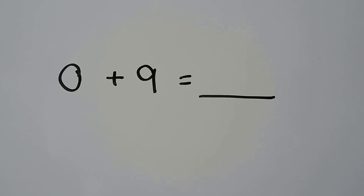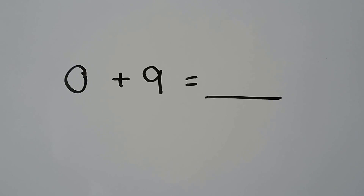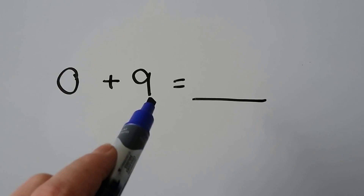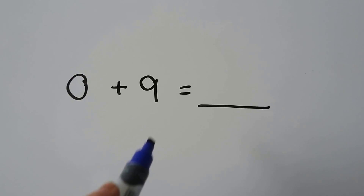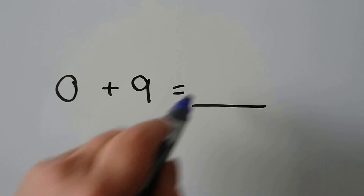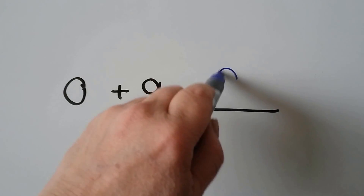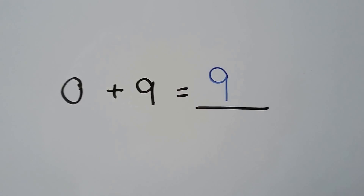Zero plus nine. Whenever we add zero to a number, the number stays the same. It's equal to nine.